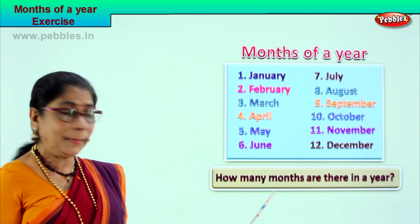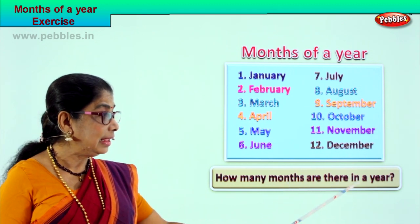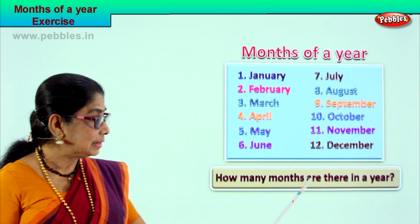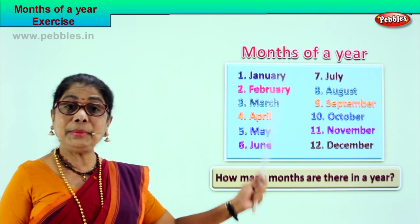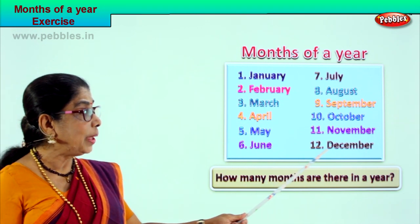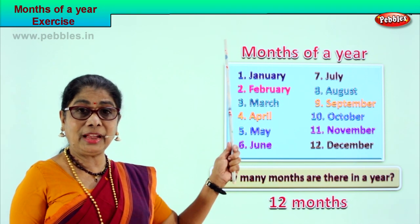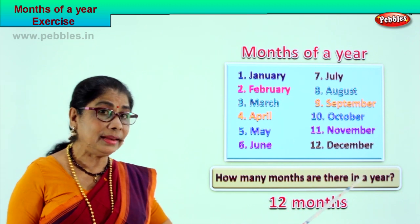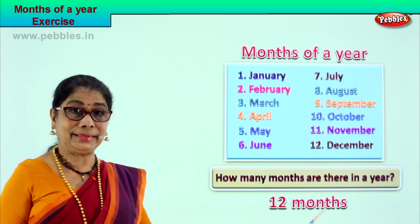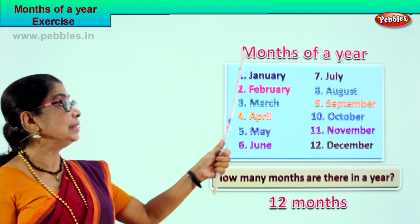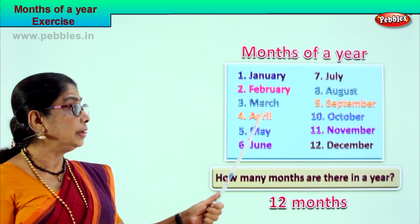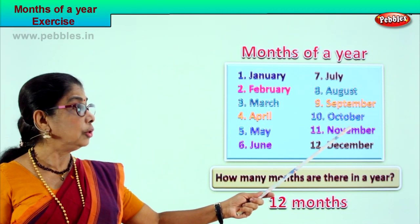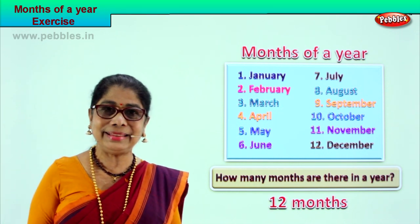How many months are there in a year? Look at the chart. Read again — how many months are there in a year? There are 12 months in a year, numbered 1 to 12. All the 12 months are: January, February, March, April, May, June, July, August, September, October, November and December. 12 months in a year. Very good.